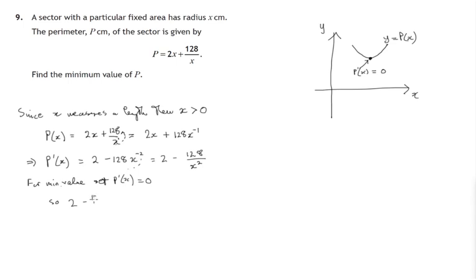So 2 minus 128 over x squared is equal to zero. Let's add 128 over x squared to both sides, multiply both sides by x squared, divide both sides by 2, and then square root both sides. Now at this stage, we'd have to declare that we know x is greater than zero. So x equals negative 8 is not a valid solution for the reason that we've already given. So x equals 8 is the only possibility.